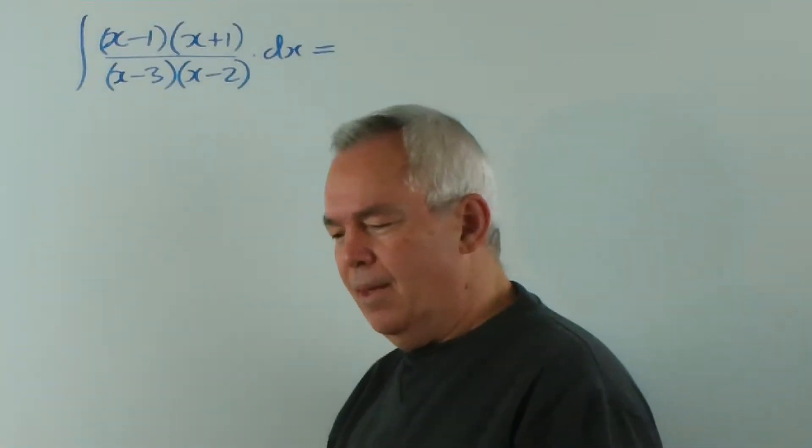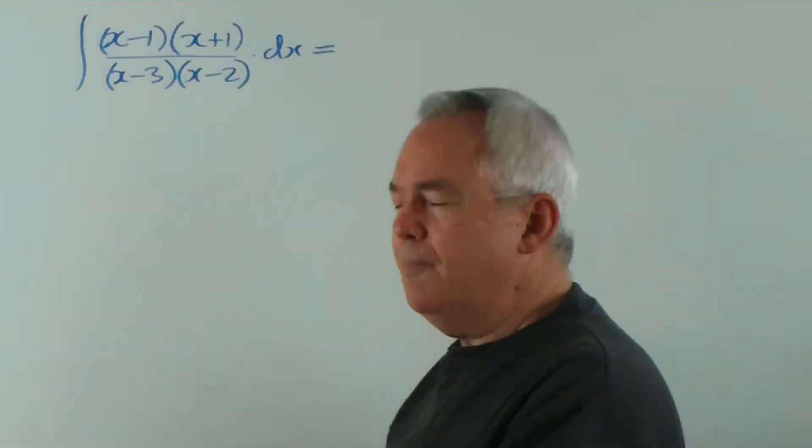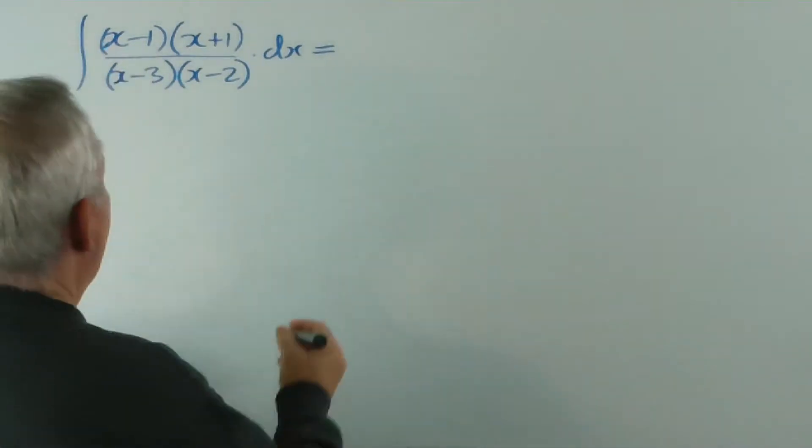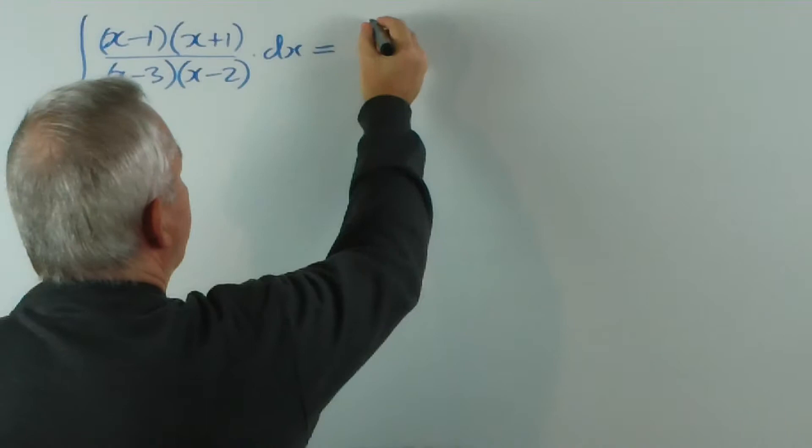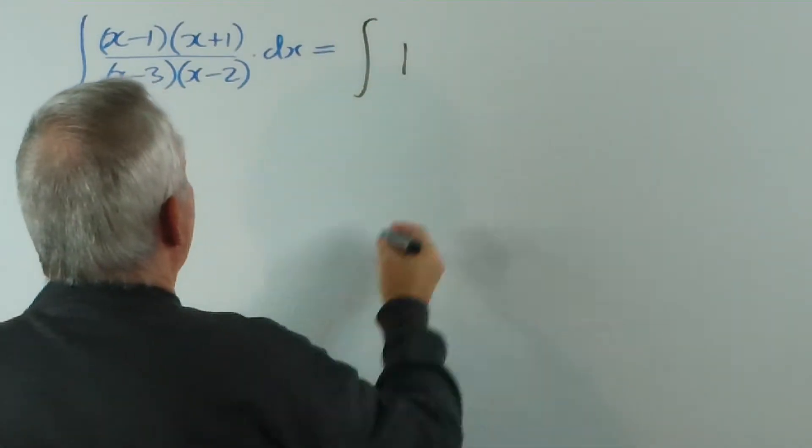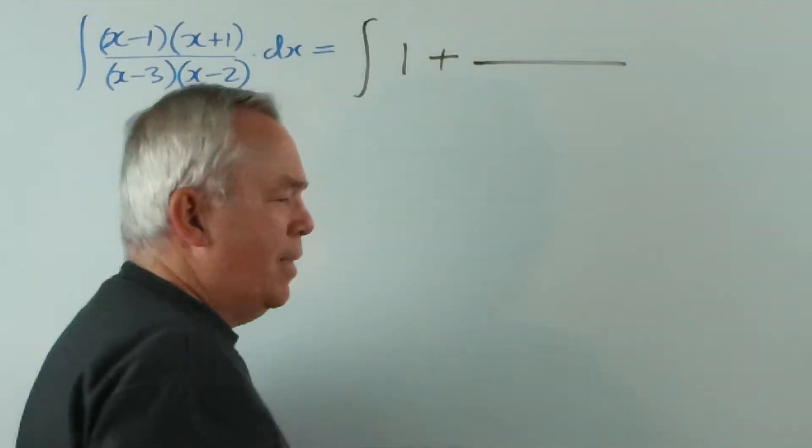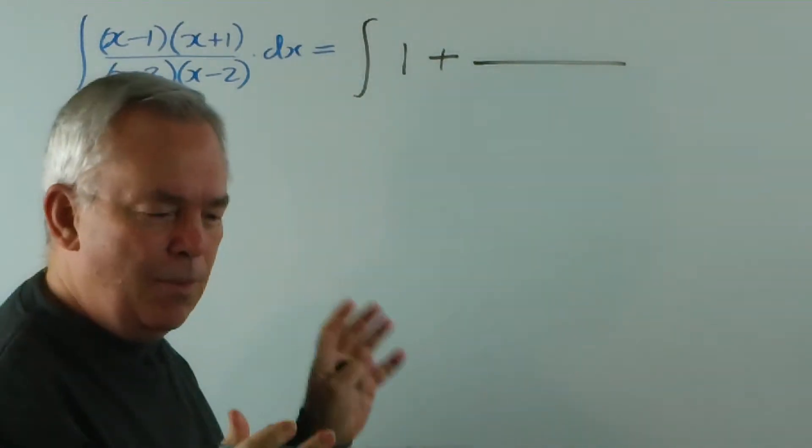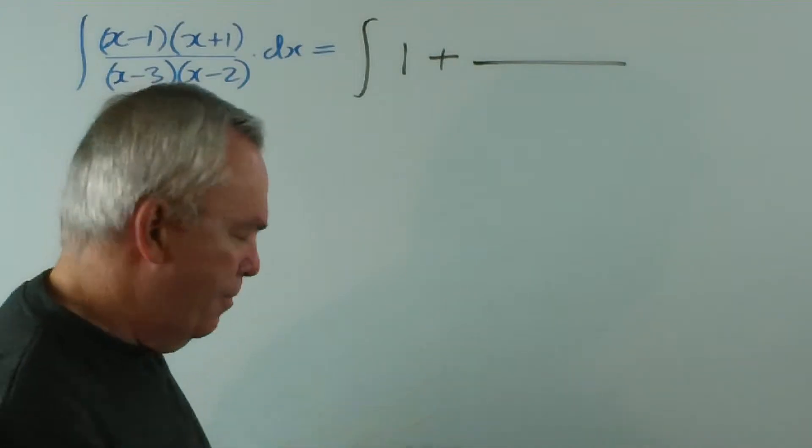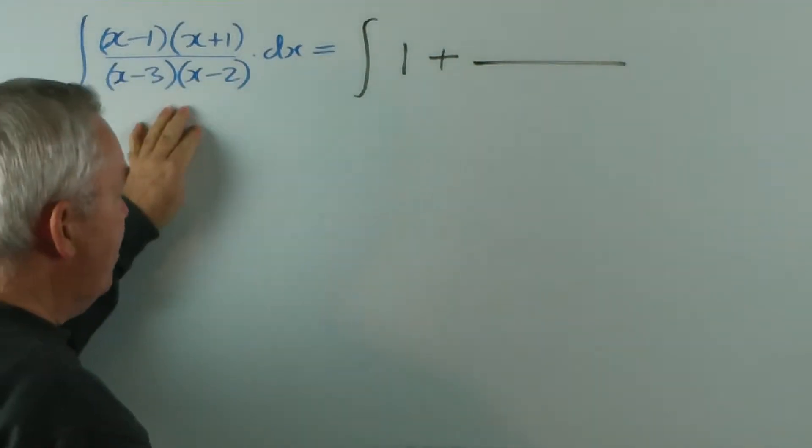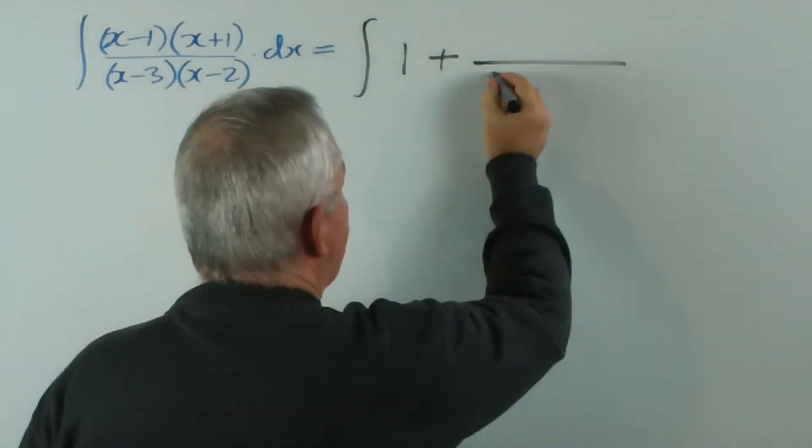When we divide one quadratic by another and they have the same coefficient, we're going to get one plus something. Now we could perform a long division, whichever method you prefer, synthetic, long, whatever. But I'm going to suggest this.